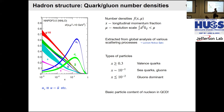Let's look at what we actually know about the most basic characteristic of the system — the quark and gluon number densities. Here we see a plot of these quark-gluon number densities.